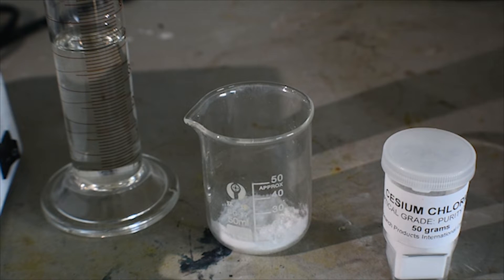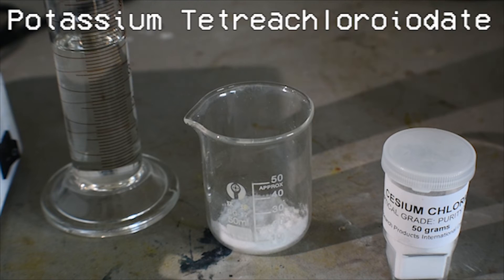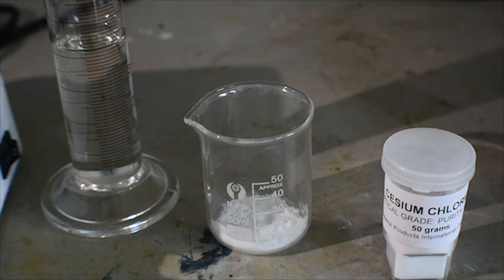First, I'm going to make potassium tetrachloroiodate, formula KICL4, via the reaction of potassium iodate with hydrochloric acid. This will generate chlorine gas in a large quantity, so this must be done outside in good ventilation or in a fume hood.